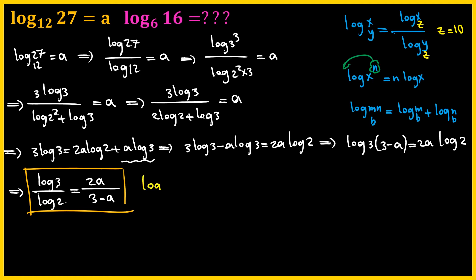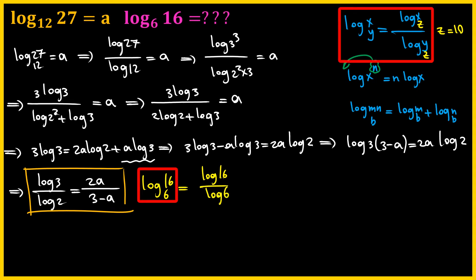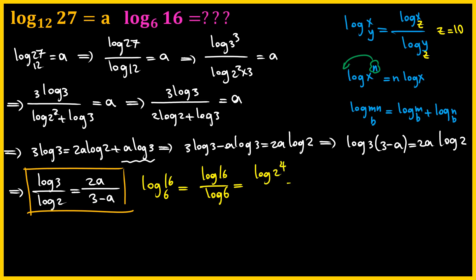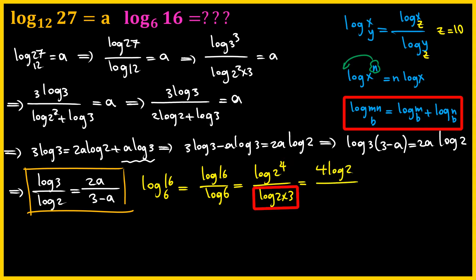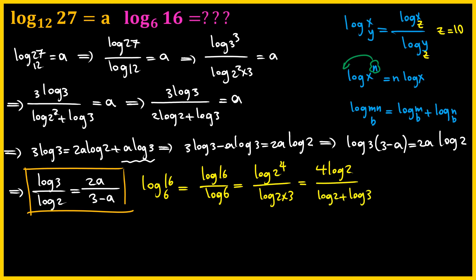So we want to evaluate log 16 with base 6. I'm going to rewrite it as log 16 over log 6 by using the change of base property. And then we can factor 16 as 2 to the 4th, and we can factor 6 as 2 times 3. And then by using the power property on the top, we get 4 times log 2. And by using the product property on the bottom, we get log 2 plus log 3. And this is great because we have everything in terms of log 2 and log 3. But the problem is, how can we use this ratio to evaluate this expression?